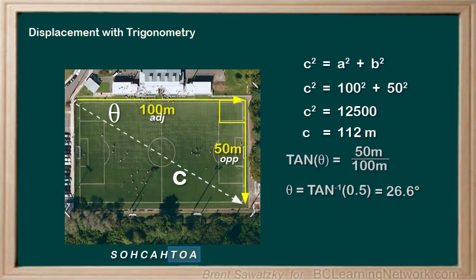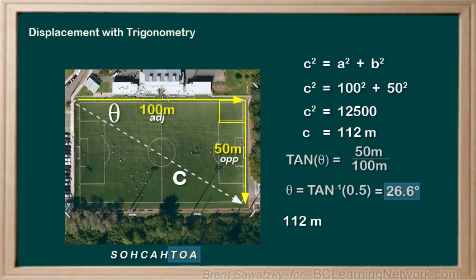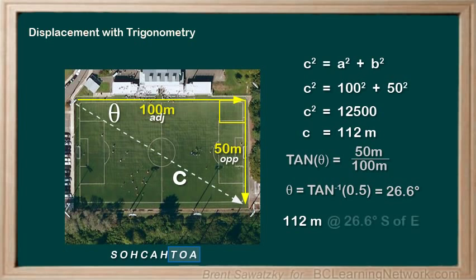Now we're ready to write our final displacement with both magnitude and direction. The magnitude is 112 meters. For the direction, the angle is 26.6 degrees, and since east is our reference and we're going 26.6 degrees toward the south, we would say 112 meters at 26.6 degrees south of east.